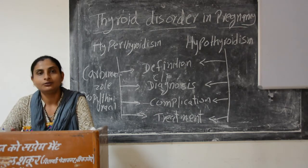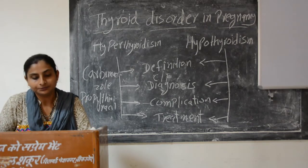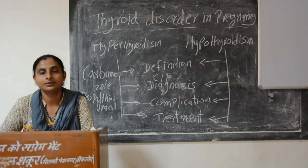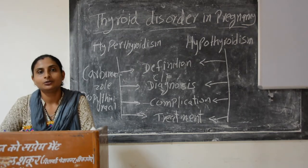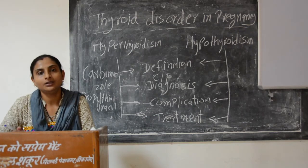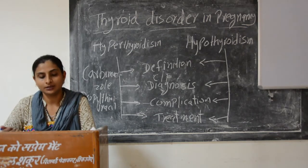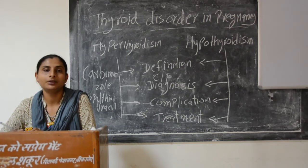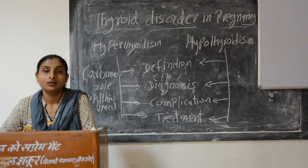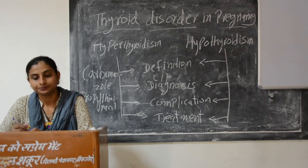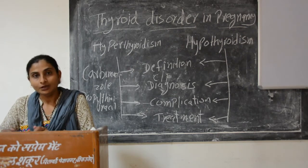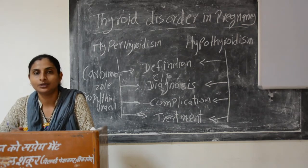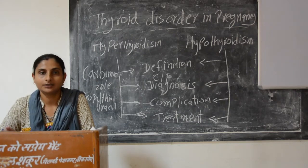Surgical treatment involves the thyroid gland — specifically thyroidectomy, which results in removal of the thyroid gland. This is done if the patient does not respond to antithyroid drug therapy or if there is toxic or other medical treatment failure.